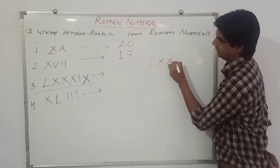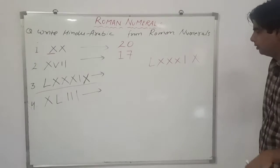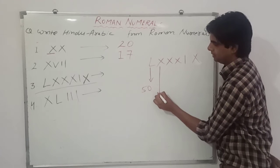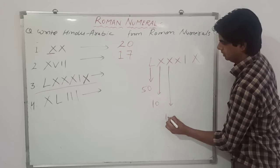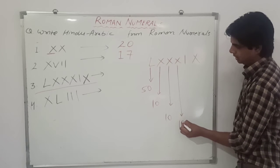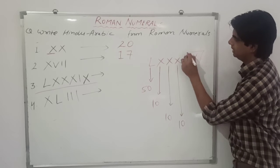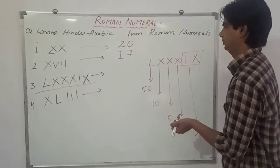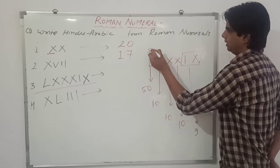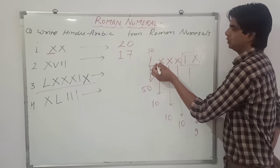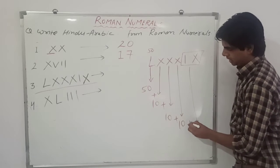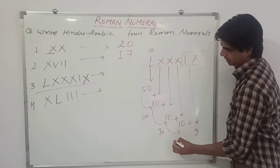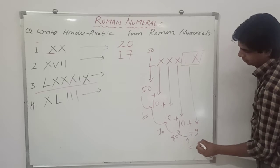Next is LXXXIX. L means 50, X means 10, X means 10, X means 10, and IX means 9. L is the biggest number and all symbols to the right are smaller than 50, so we add them all. 50 plus 10 is 60, plus 10 is 70, plus 10 is 80, plus 9 equals 89.